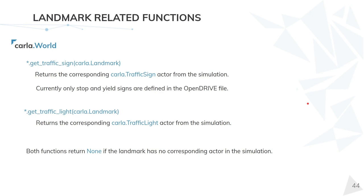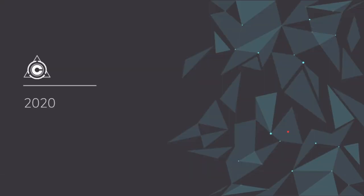Finally, there is the connection with the simulation. Landmarks represent the OpenDrive signal record, and from a landmark we want to retrieve the corresponding actor in the simulation. For instance, if we have detected a traffic light through landmarks and want to query its state, we use the function getTrafficLight to get the Carla actor and then query whether it's green or how long it takes to turn red. That concludes this presentation. Thank you.